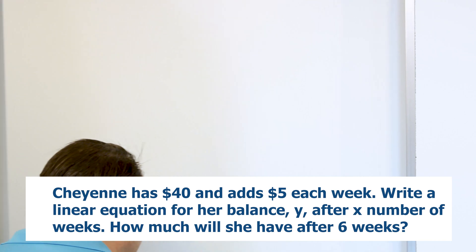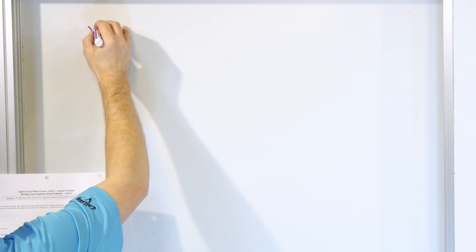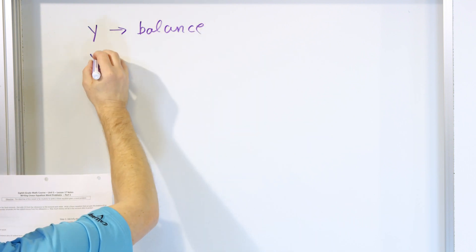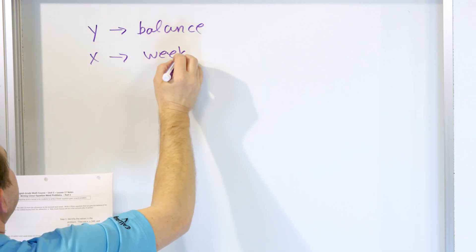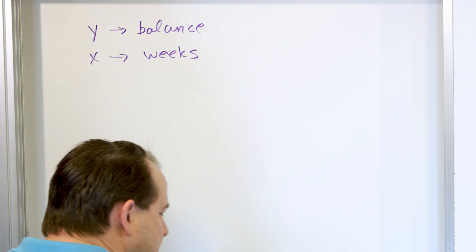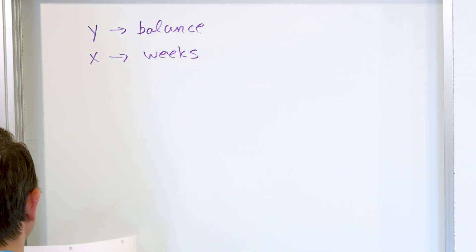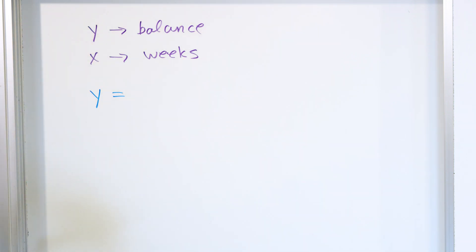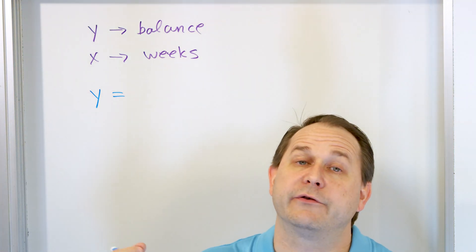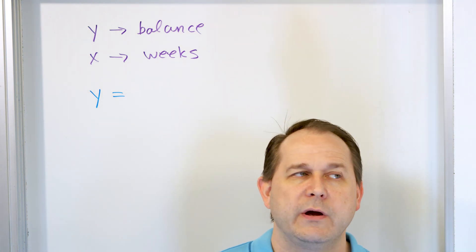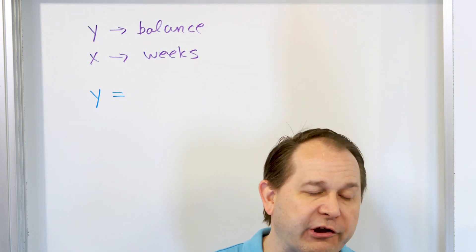The best way to approach this is to write down what you know. The variable Y is the balance, and the variable X is the number of weeks she is saving. So if the problem asks how much she has after six weeks, X represents the number of weeks. We're trying to write an equation for the amount of money she has - Y. She starts with $40 in her bank, even after zero weeks when no time has passed.